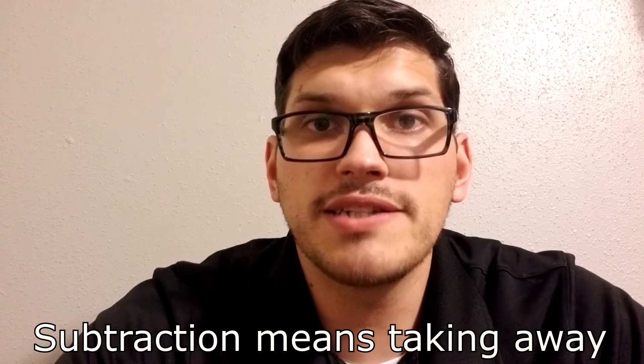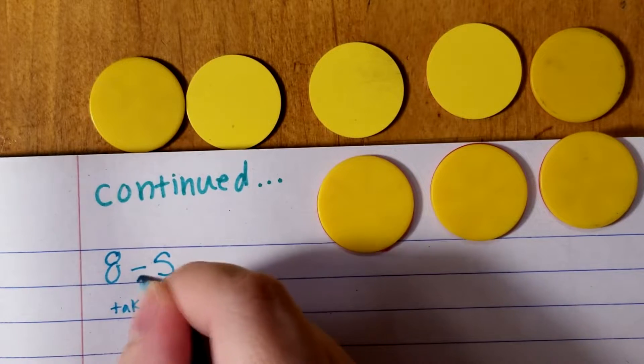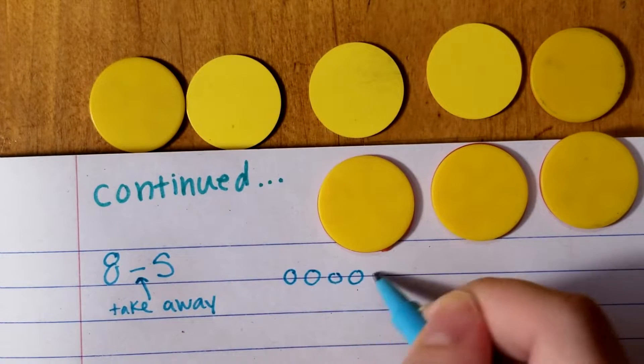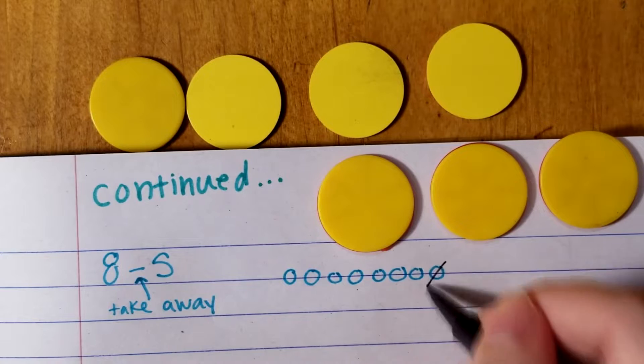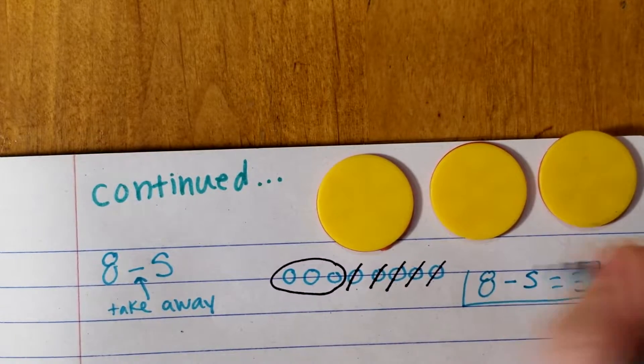Now this is where most students get confused, but I will walk you through it. Remember subtraction means take away. Again, we will start with an easy one. Eight minus five. We have eight positives and we're taking away five. Eight minus five equals three.